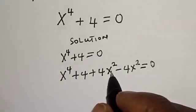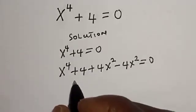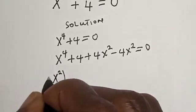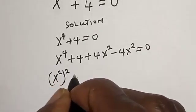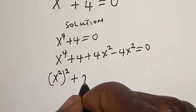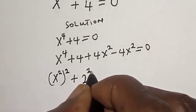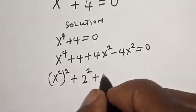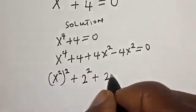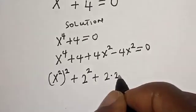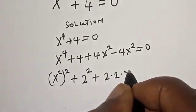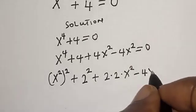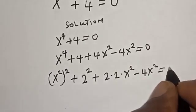That is x raised to power 4 plus 4 plus 4x squared minus 4x squared is equal to 0. This does not formally change the equation. Then this is x squared plus 4, which is 2 squared, plus 2 times 2 multiplied by x squared, minus 4x squared, is equal to 0.